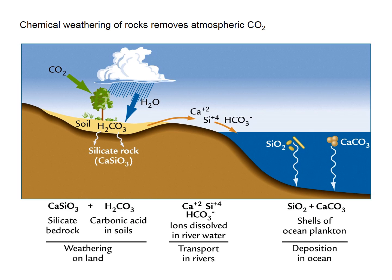So this is the take-home message: we've got a process that happens mostly on land where rocks interact with water and carbon dioxide. This weathering process forms lots of dissolved ions — calcium, silicon, bicarbonate — and takes up CO2. These ions go into the ocean and then precipitate out as shells, so we'll have a look at a little bit of the detail of this process.